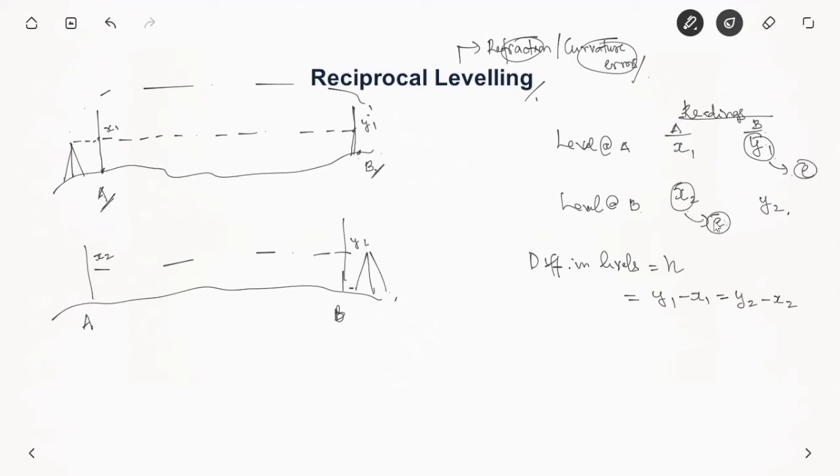So both we are saying that error will be E, assuming that we transfer this instrument quickly so that the refraction error remains same and there is not much atmospheric changes which changes the refraction error. So your actual difference in level will be h equal to, so this one has an error E. Combined refraction and curvature correction will be minus 6 by 7 d squared by 2R. So it has a negative sign.